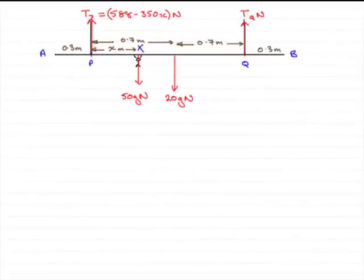Now, in this next part, we've got to find the tension in the rope at q, tq in other words, in terms of x. And what you'll notice is I've updated the diagram with the tension in the rope at p from the previous answer, 588 minus 350x newtons.